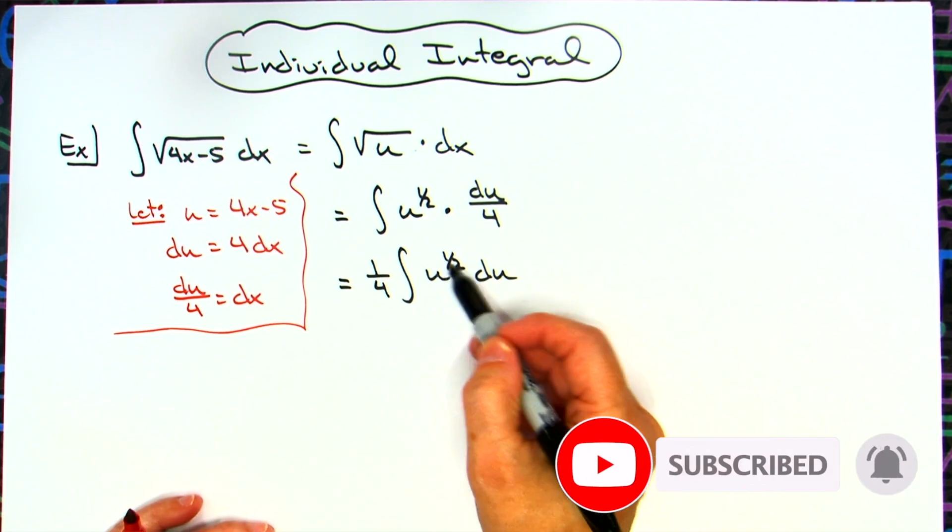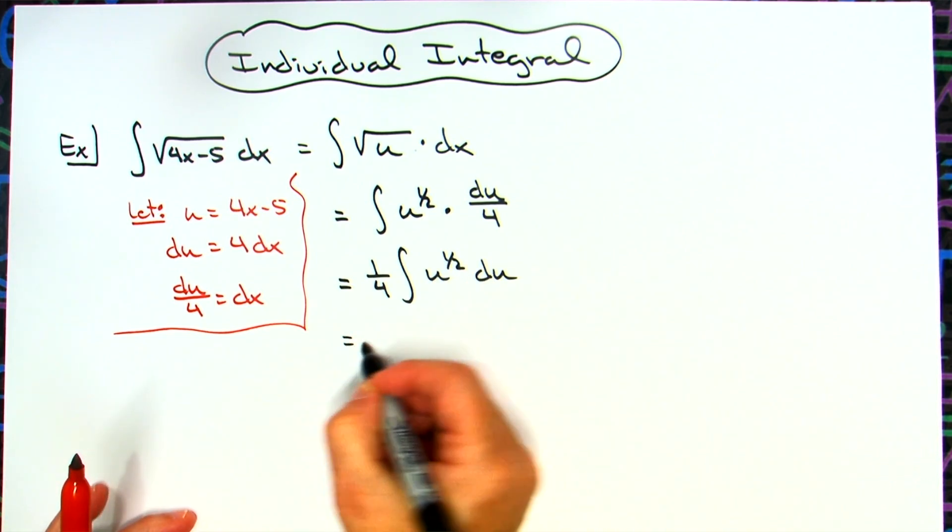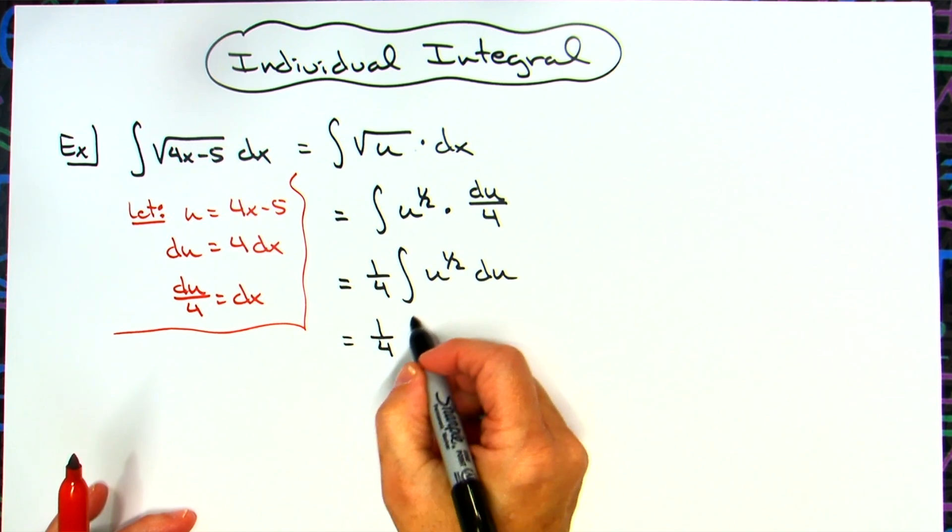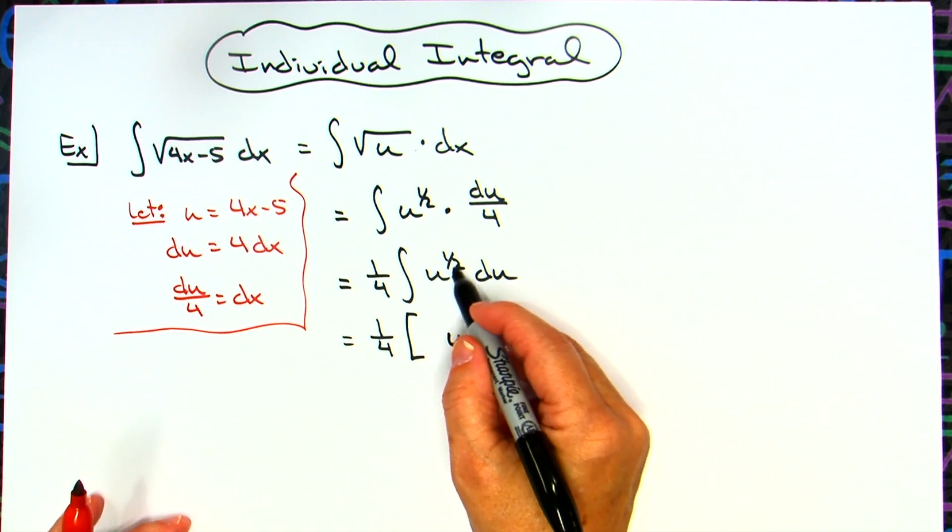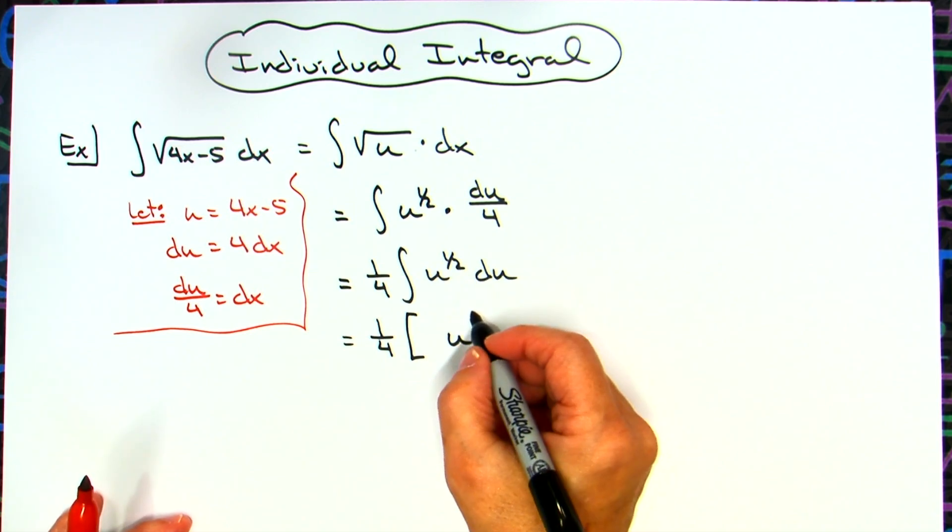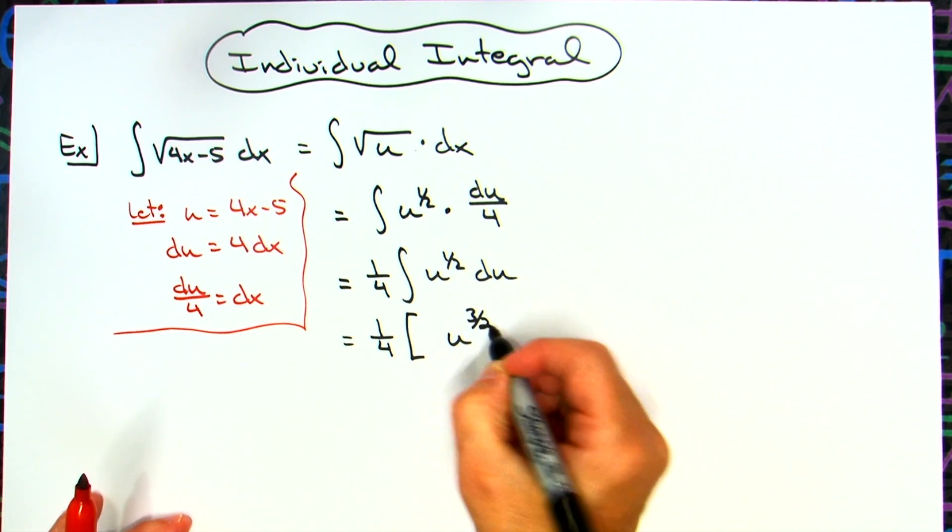So all we have to do is add 1 to that exponent, keeping that 1 fourth out in front there for a minute. So we'll have u, adding 1 to that, we're going to have 3 halves.